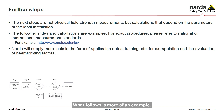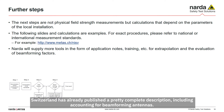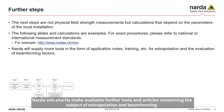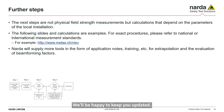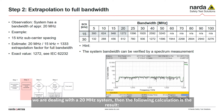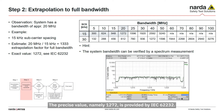What follows is an example of extrapolation. The precision of the extrapolation is in the hands of the respective national and international bodies. Switzerland has already published a complete description including accounting for beamforming antennas — you can find the description under the provided link. NADA will shortly make available further tools and articles on extrapolation and beamforming. Step 2 is extrapolation to the full bandwidth of the system. For example, if the spectrum analysis indicates a 20 MHz system, with a subcarrier spacing of 15 kHz and a bandwidth of about 20 MHz, the approximate correction factor is 1,333. The precise value, 1,272, is provided by IEC.